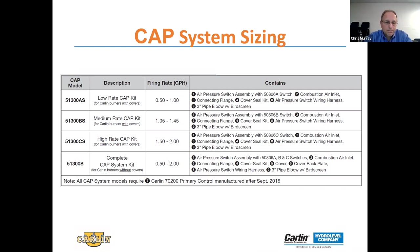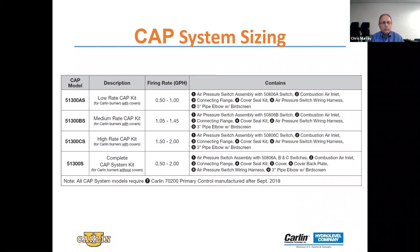Keep in mind that if you're using a CAP system, you have to use a Carlin 70200 primary control made after September of 2018. It is UL approved only on a Carlin EZ burner for now.